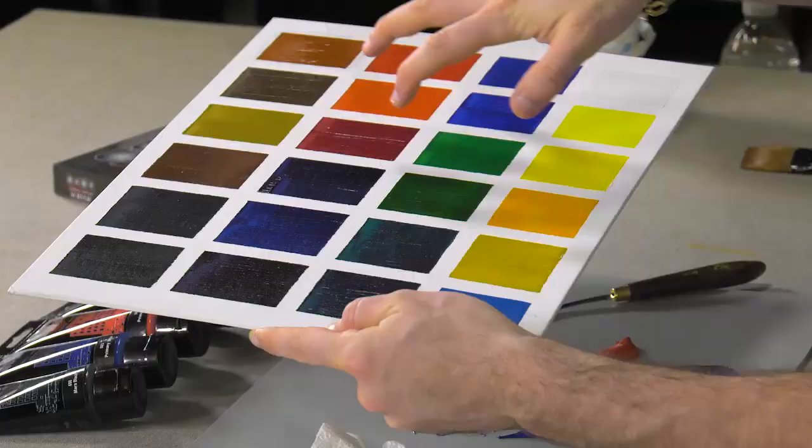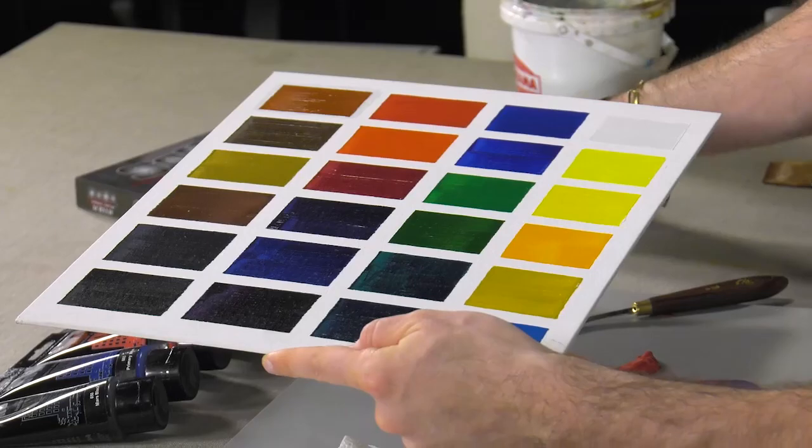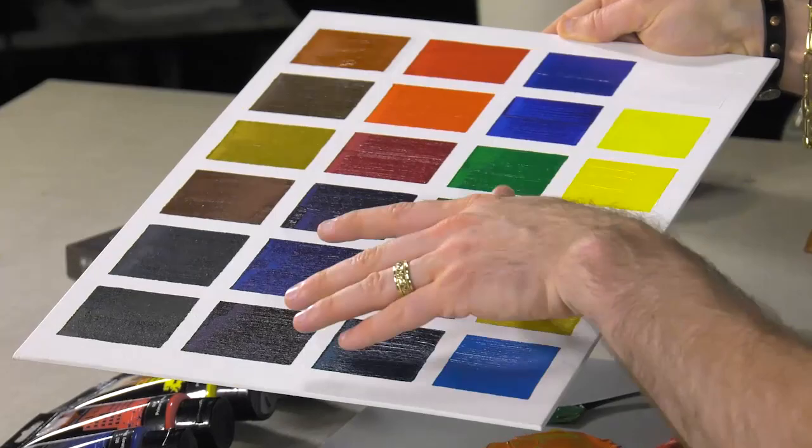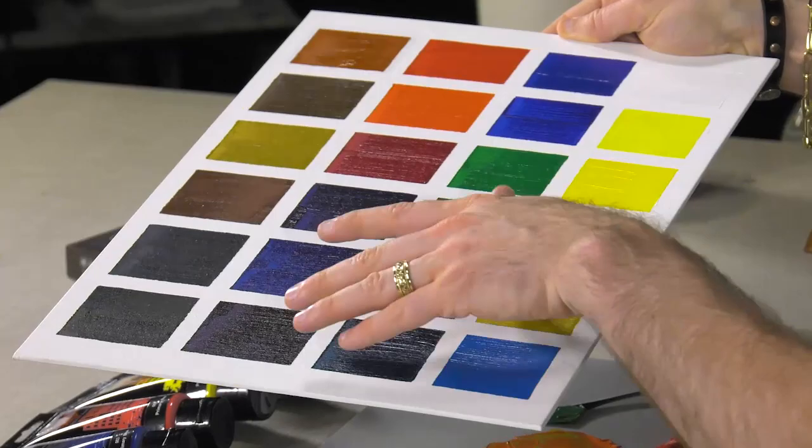Let me show you what they look like dry. These are all the colors that come in the 24 color set, and they all have a beautiful, lustrous sheen. Dry, waterproof, just like any other acrylic, and very bright colors. So, Soho Urban Artist Acrylics, give them a try.